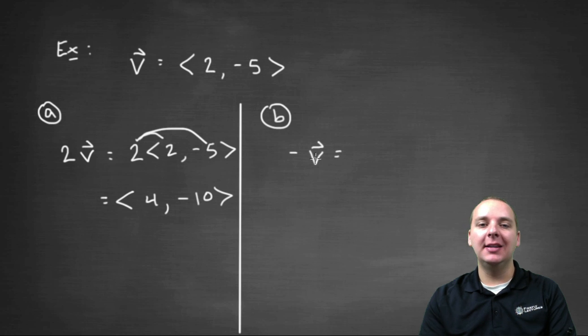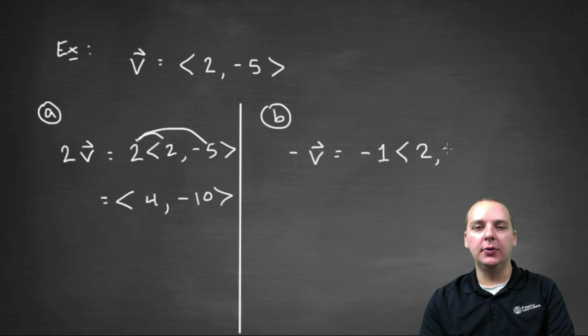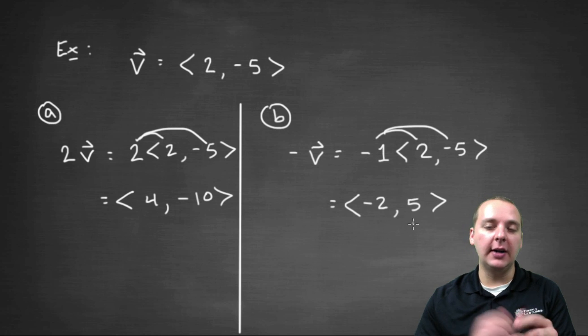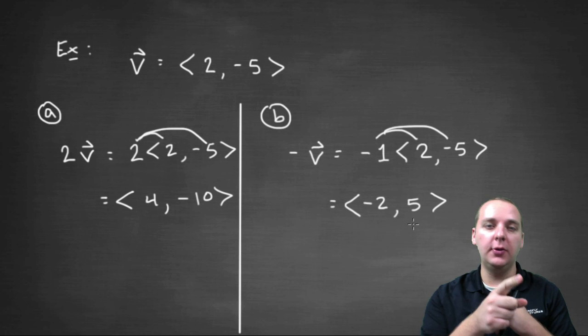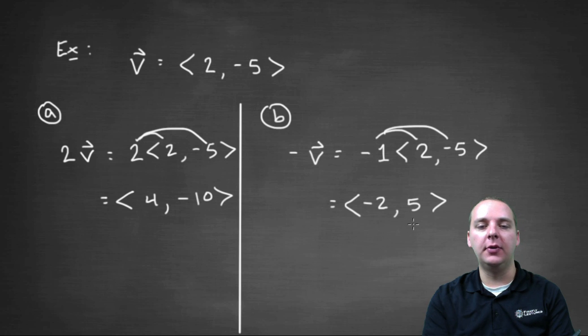Alright, next, negative v. So here it's like an understood scalar of negative one and we have the vector two, negative five. Again, we distribute that scalar of negative one through and we would get the vector negative two comma positive five. Now we're not going to graph this, but if we did graph it, if v pointed one direction, negative v would be directly backwards, it would be in reverse from the direction of v.